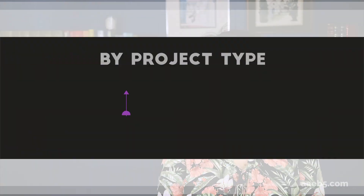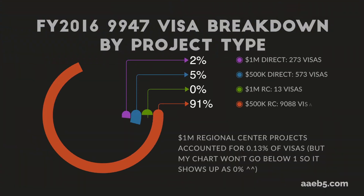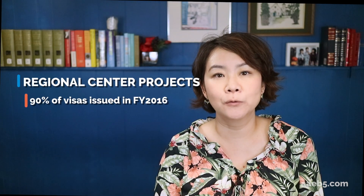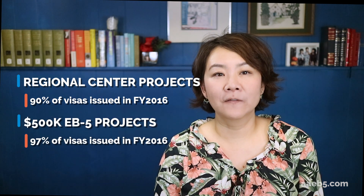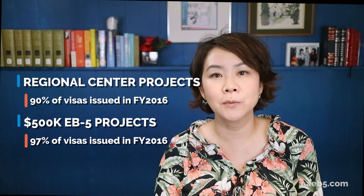Let's look at some numbers to gain perspective on the issue. In fiscal year 2016, there were a total of 9,947 EB-5 visas issued. Of that total, 9,088 visas were issued for half a million dollar regional center projects, while only 13 visas were issued for one million dollar regional center projects. 573 visas were issued for half a million dollar direct EB-5 projects, while 273 visas were issued for one million dollar direct EB-5 projects. So basically, 90% of visas were issued for regional center projects, while 97% of all EB-5 visas were issued for half a million dollar projects.